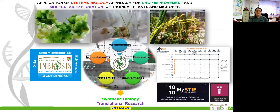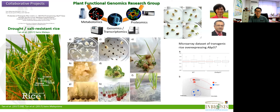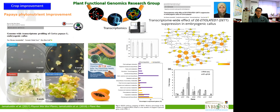Basically, by identifying the genes responsible for certain functions in the plant, we can target these genes for bioengineering or crop improvement. For example, the rice plant can be genetically engineered to withstand harsh drought or flood conditions for food security. We can also make papaya more nutritious.